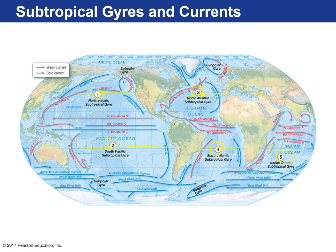There are other gyres, but they're much smaller — like the subpolar one at a higher latitude, and ones at higher latitudes in the southern hemisphere. Every single one of these is bounded by those four currents.